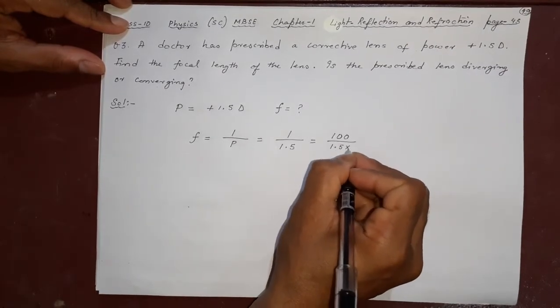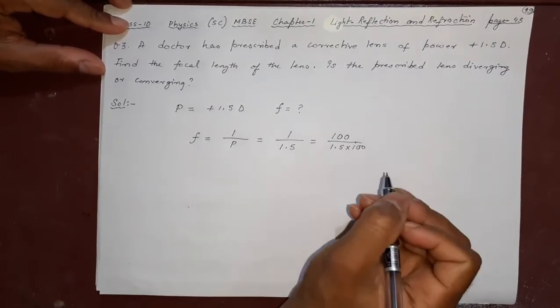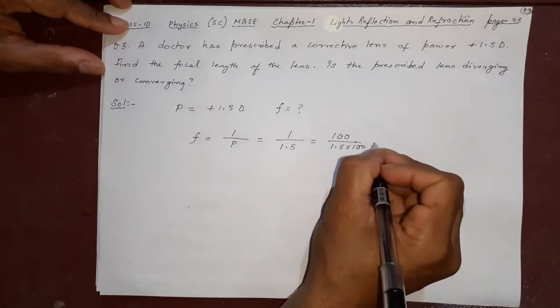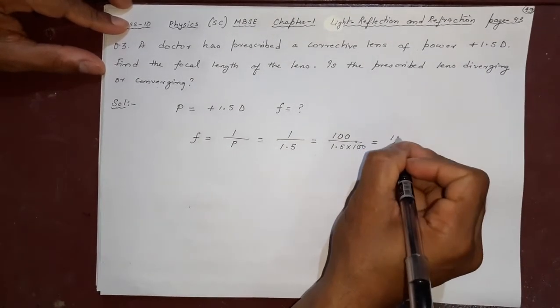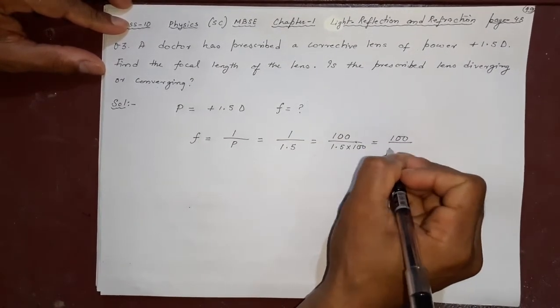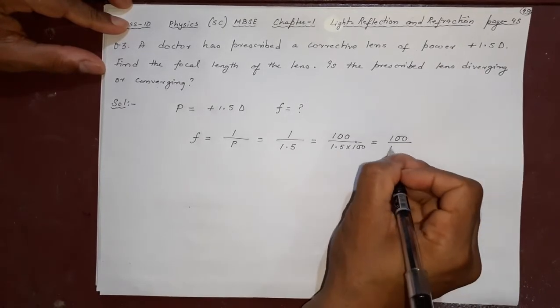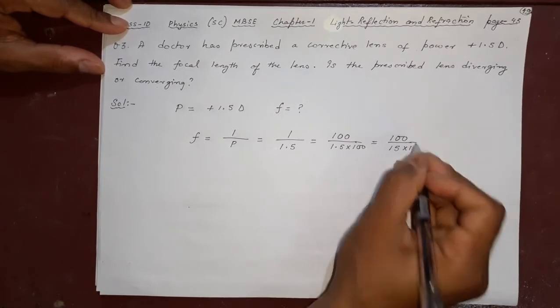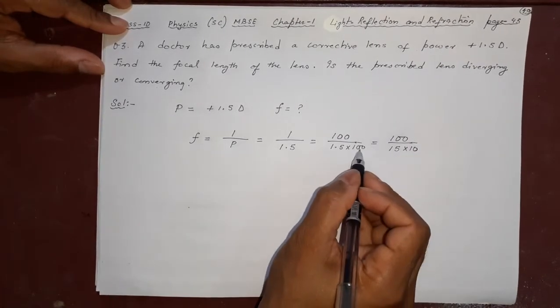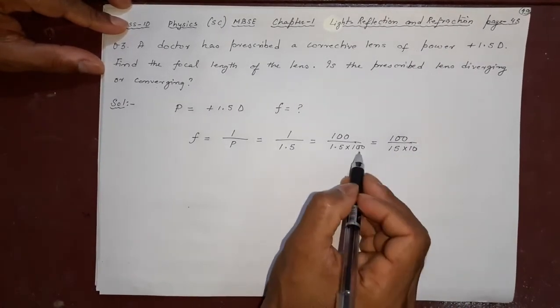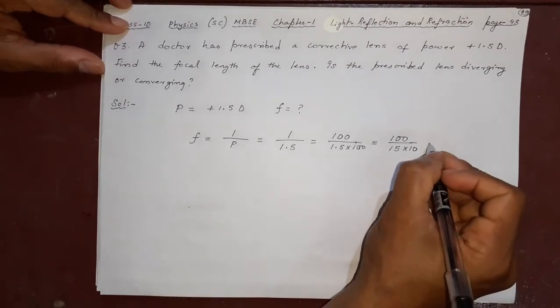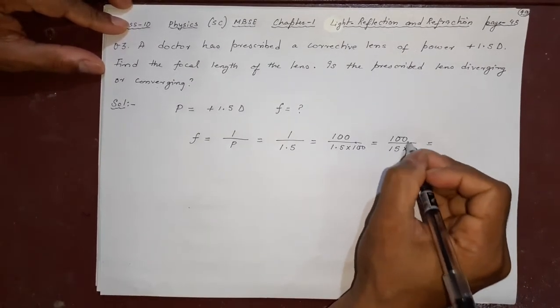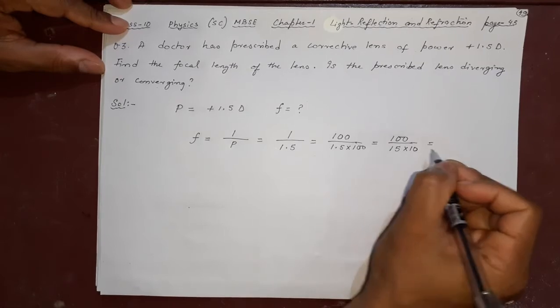1.5 into 100 and 100 here also. Just for the sake of calculation. Here I will write 100, here I will write 15 and 10. 1.5 into 10 is 15 and 10 I will keep as it is. Now 15 and 10 I can divide. This 10 I will keep here.